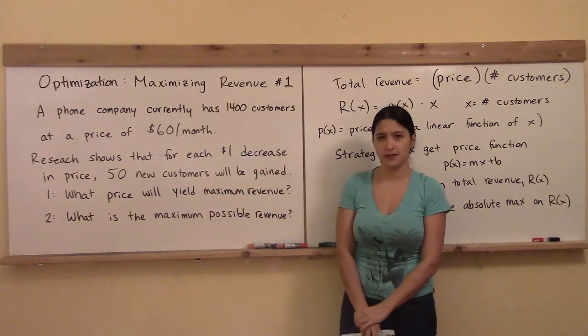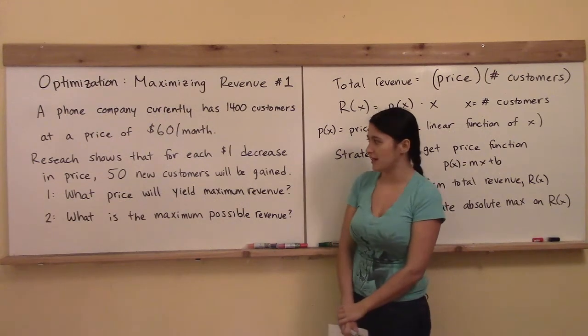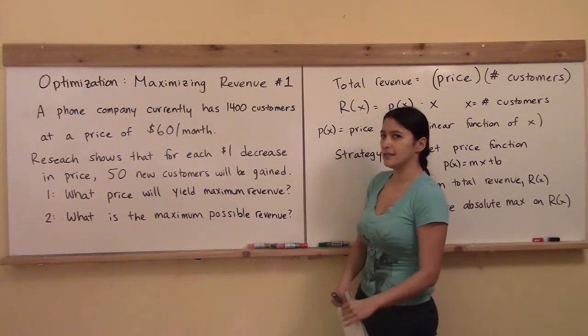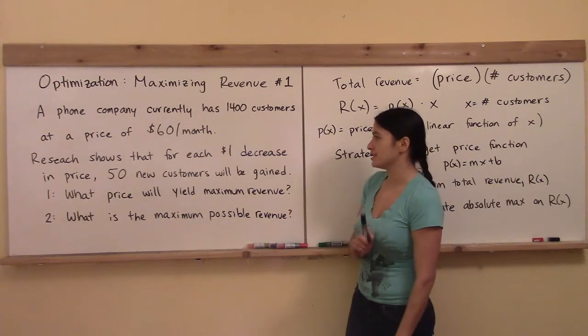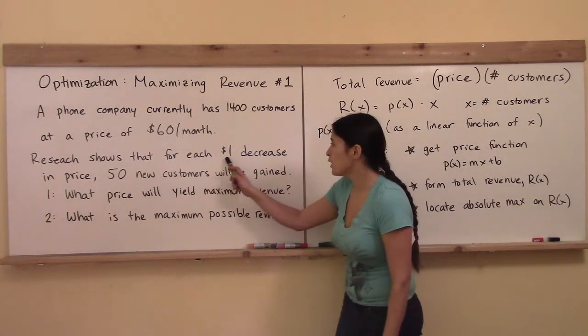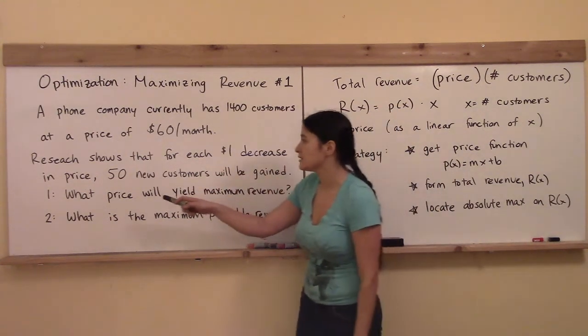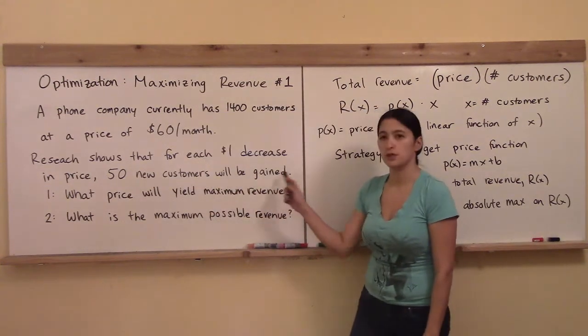Is there something over here that tells me it's a linear function of x? Right here, it gives you the slope on that linear function. For each $1 decrease in price, 50 new customers will be gained.